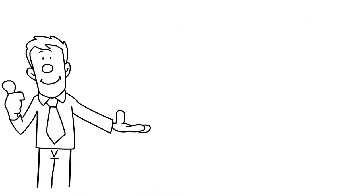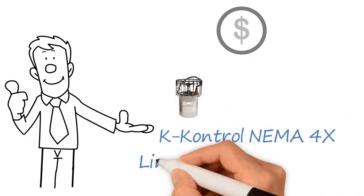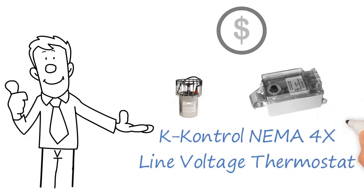This can be done economically by controlling the de-icer with a K-Control NEMA 4X line voltage thermostat.